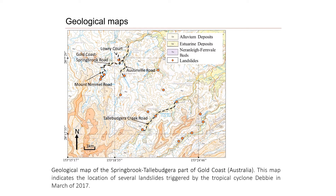This is an example of a geotechnical investigation conducted on the Gold Coast a few years ago. This is a map of the Springbrook area showing three types of rocks and soils. Another thing you can see on this map is the location of landslides — all the red dots show where landslides occurred. This is a very useful map because it tells us in which soil or rock formations landslides occurred, so we can use this information to predict future landslides and try to mitigate them.